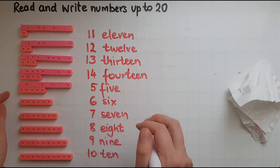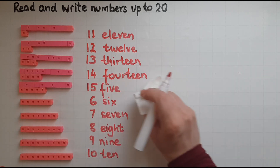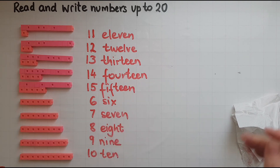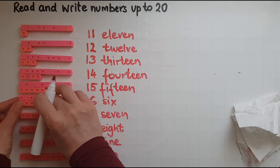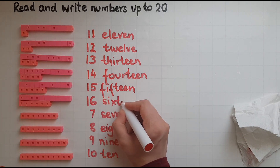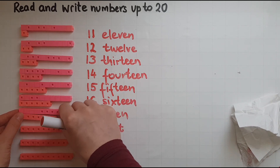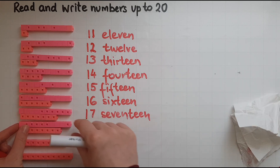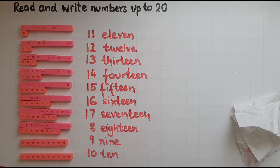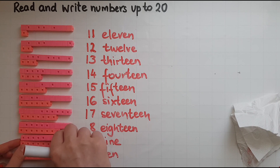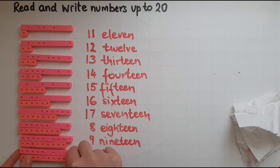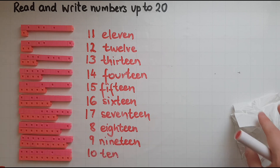Ten and five is fifteen. The spelling changes — fifteen. Ten and six makes sixteen. Ten and seven is seventeen. Ten and eight is eighteen — we have a T already in there so we don't need to add an extra one. Ten and nine makes nineteen. And then ten and ten together makes twenty.